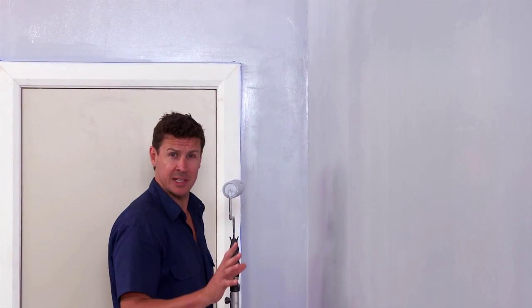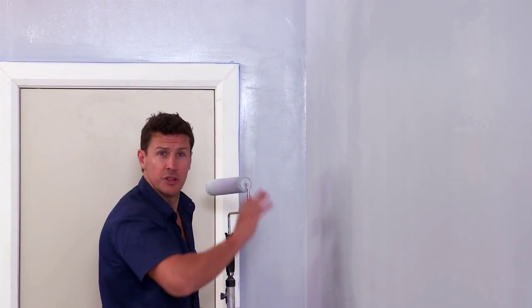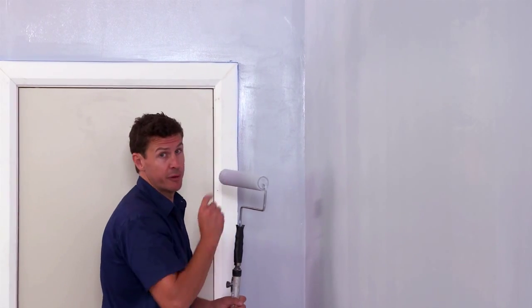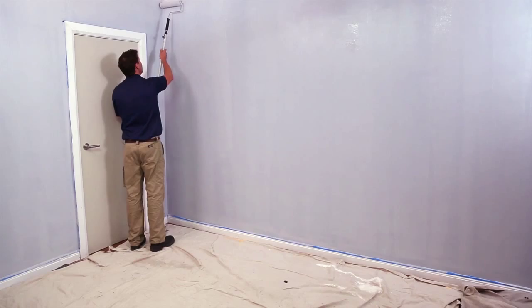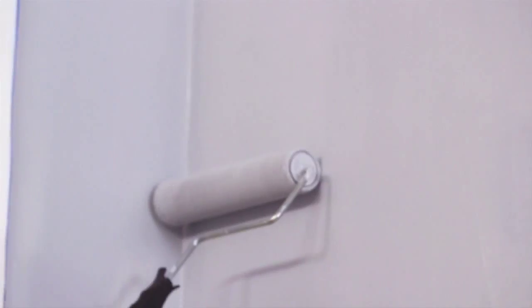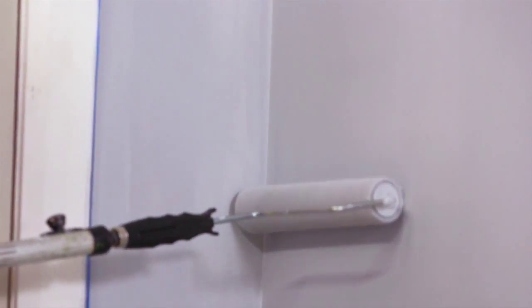Okay, now the next step is to lay off. That basically means to go all over your work and smooth everything down. No need for extra paint and no need for the W motion. Start on the left corner and just very lightly roll the roller straight down the wall.